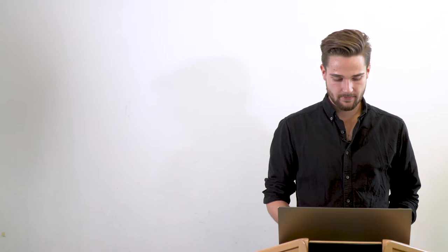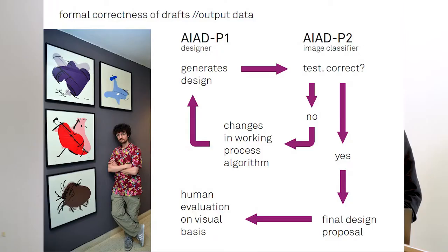For the formal correctness of the drafts at the end, I used the same example as Tom White. It's like a kind of reinforcement learning or try and error where the first program generates, the designer program generates different designs, and we have a copy of this program which we use as an image classifier that looks if the image is recognized correctly. If yes, it's the final design proposal, and if not, it's going to evolve the design of the first program.